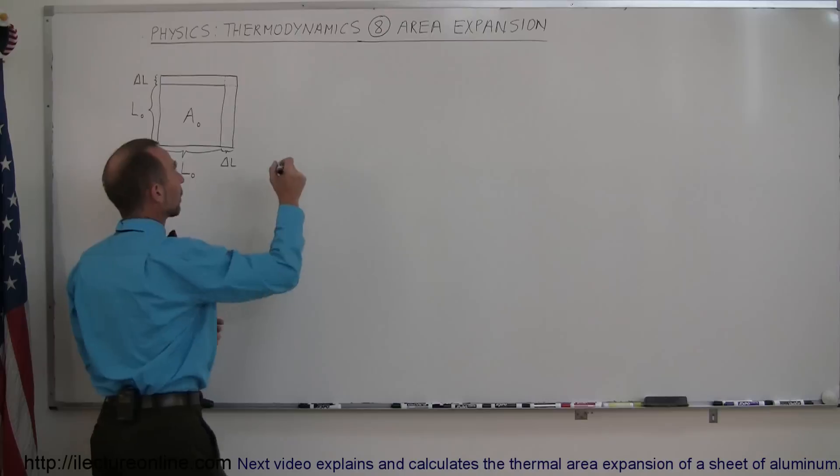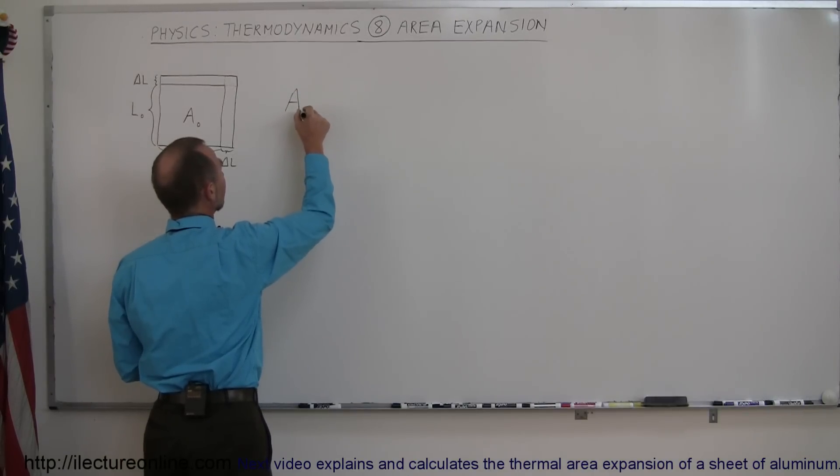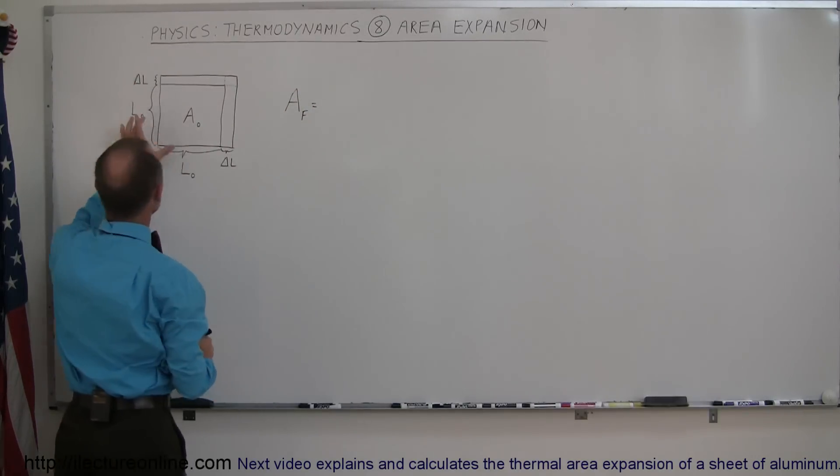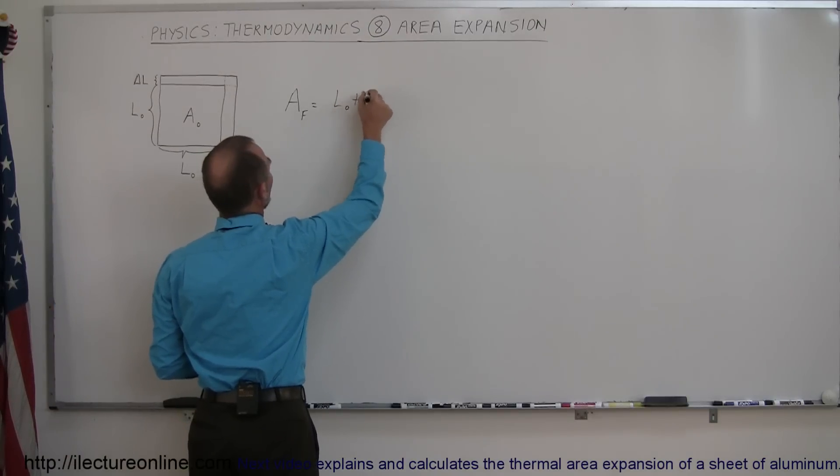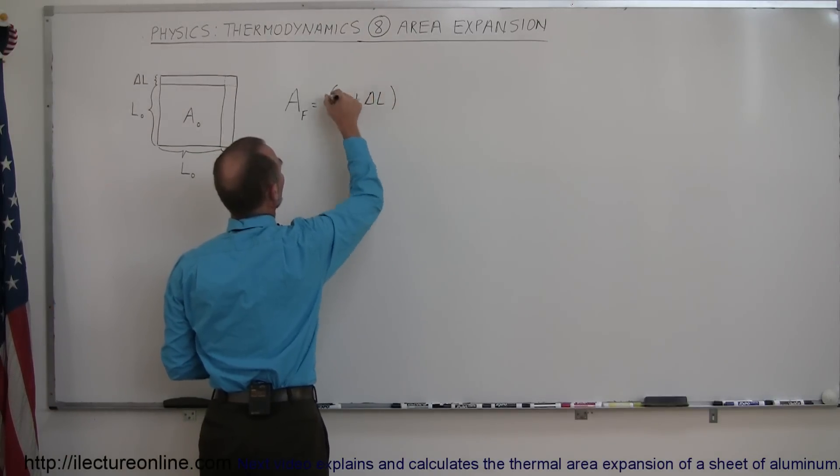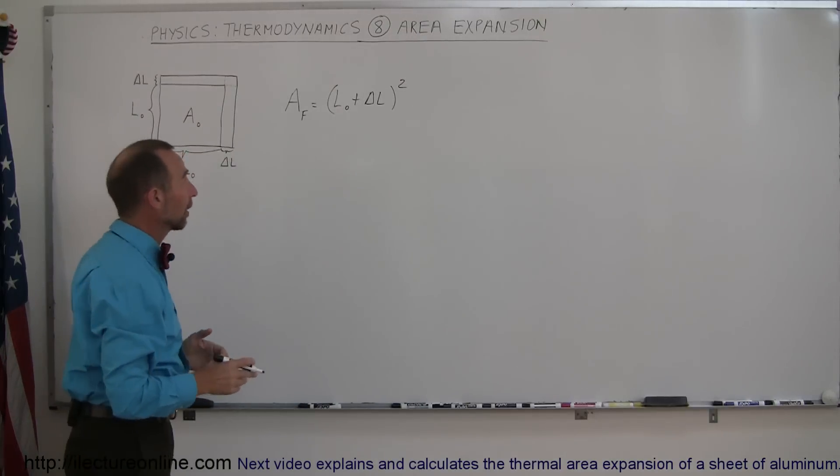So the new area, A final, is going to be equal to the product of the two sides, of course. So it's going to be equal to L sub nought plus delta L quantity squared. If we now go ahead and square that quantity, it's a binomial.